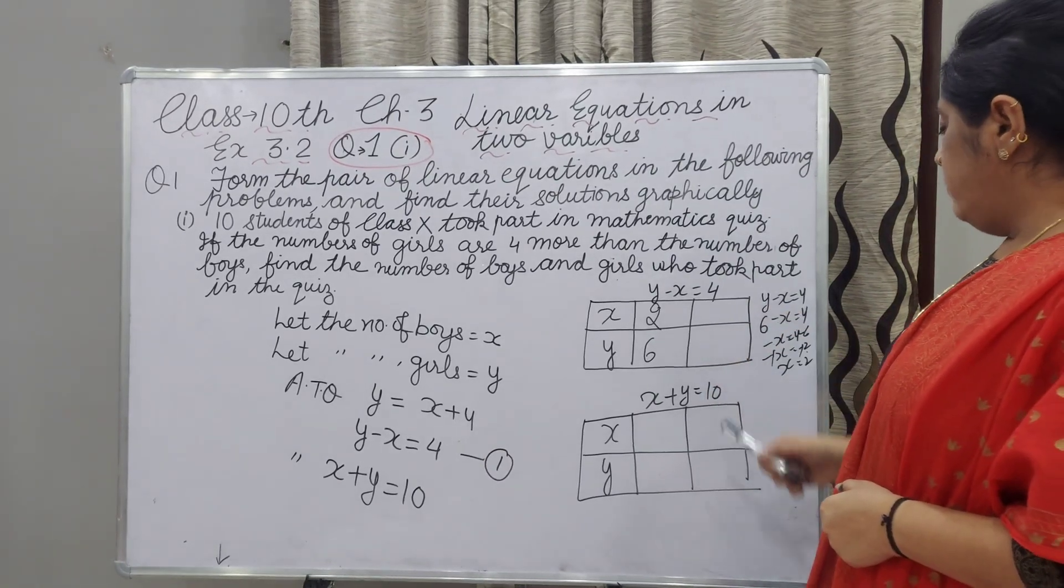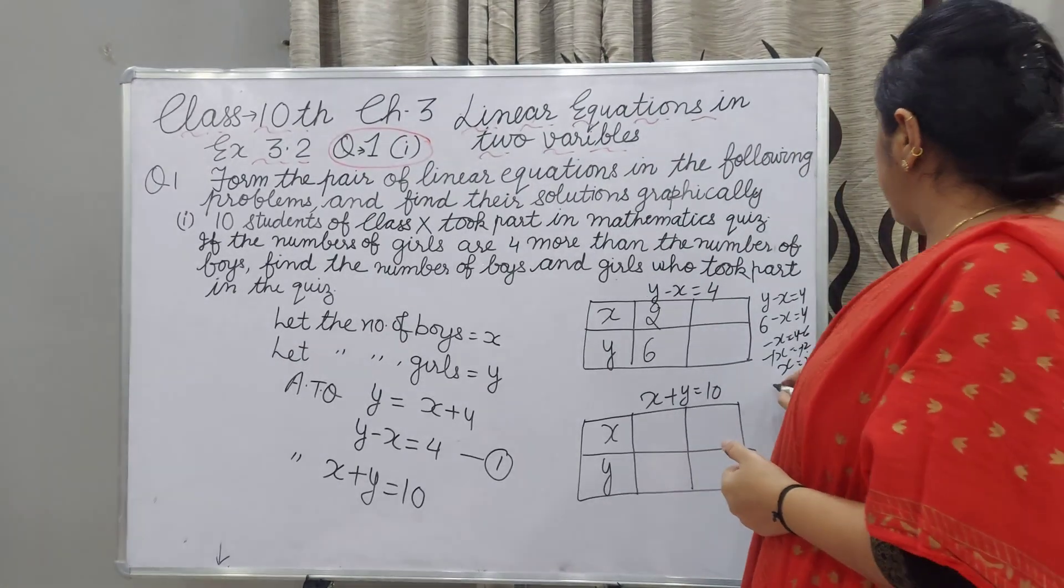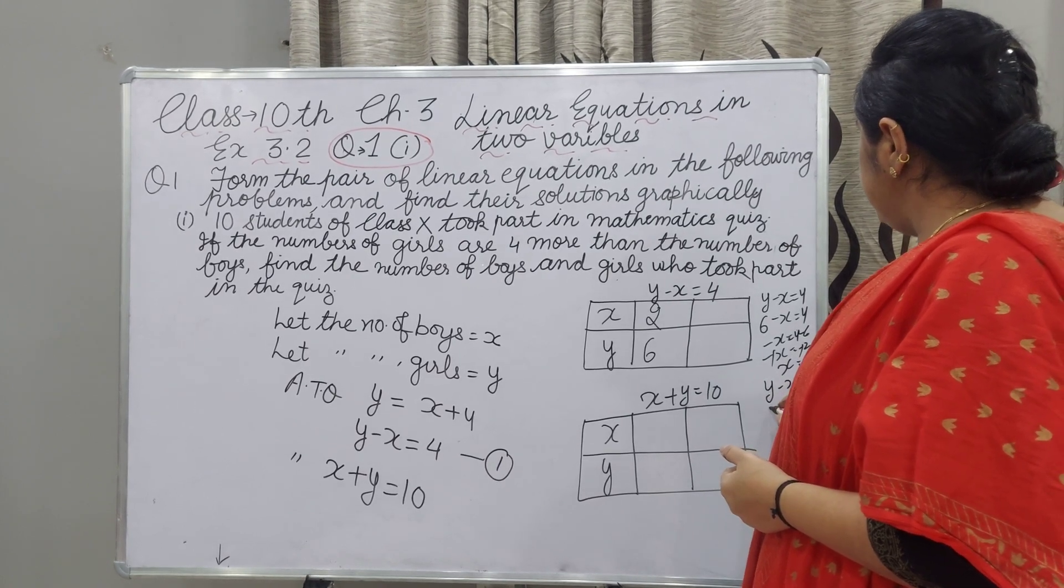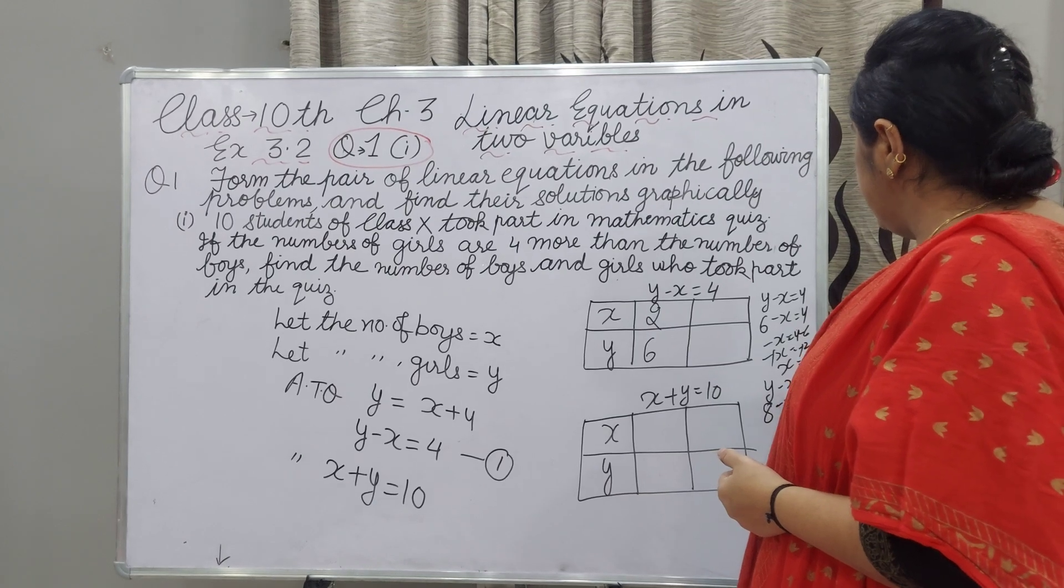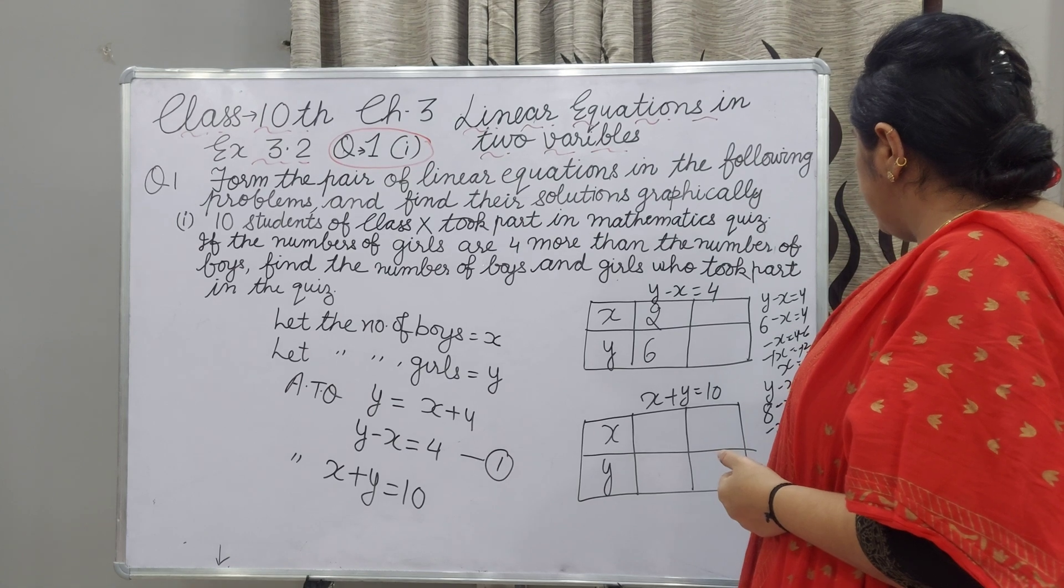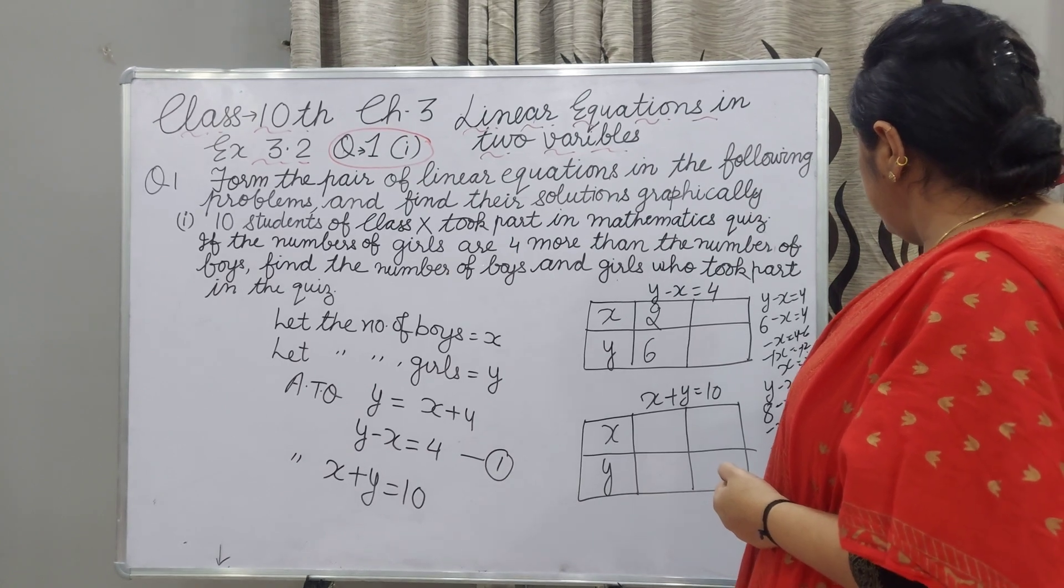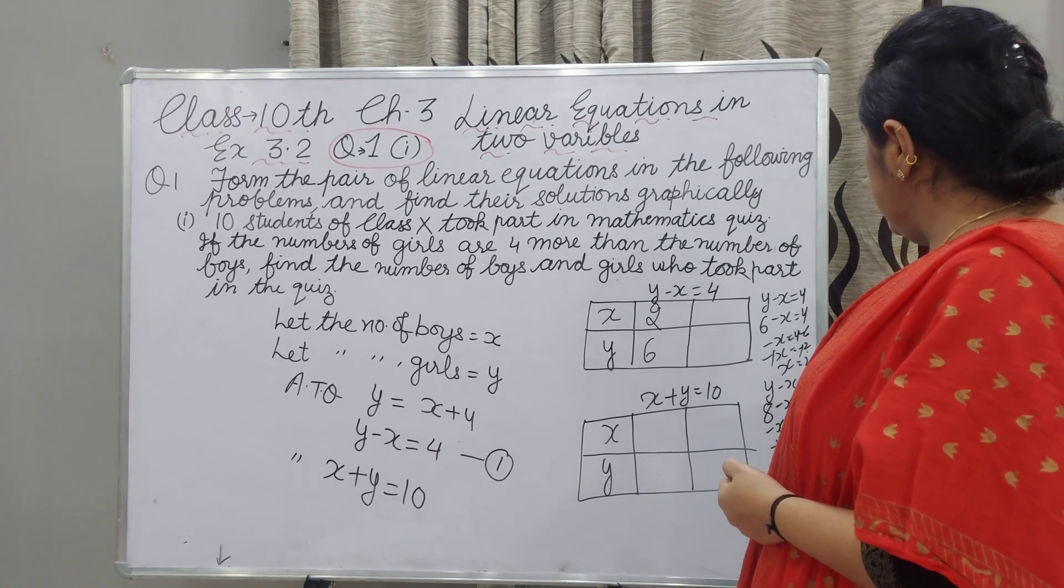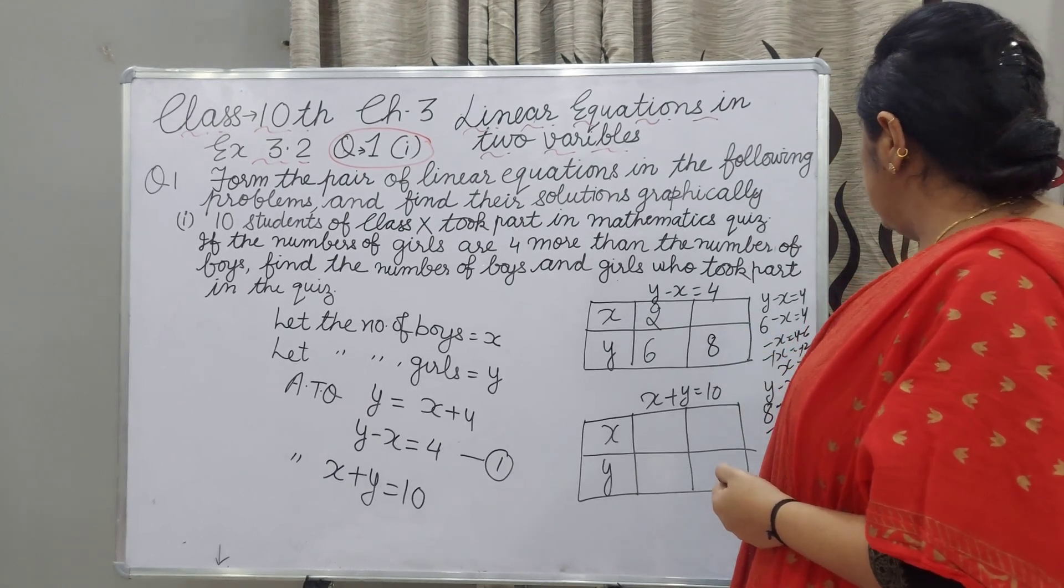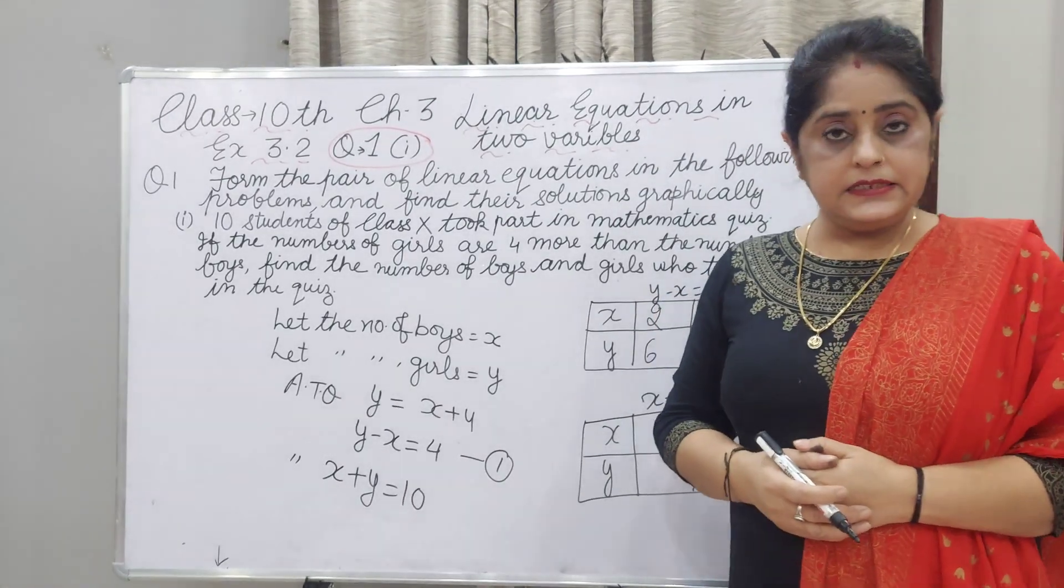Now take Y equals 8. From Y minus X equals 4, we get 8 minus X equals 4. Minus X equals minus 4, so X equals 4. If Y is 8, X is 4. This completes the table for equation Y minus X equals 4.